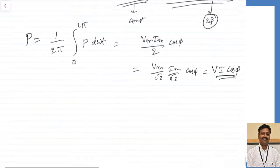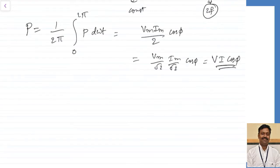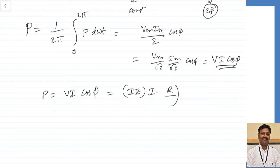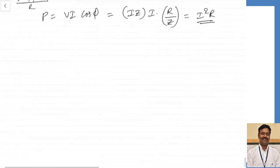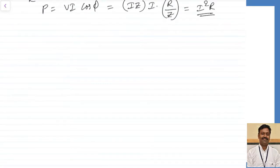We got P = V·I·cos(φ), which gives the active power. From the impedance triangle, cos(φ) = R/Z, so P = I·Z × I × (R/Z) = I²·R. This proves that whatever active power is consumed, it is lost only in the resistor. The inductor does not consume any power — one quarter cycle it takes power, another quarter cycle it returns the power back.